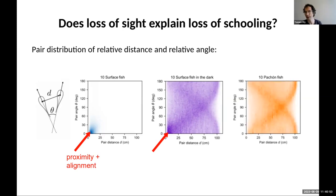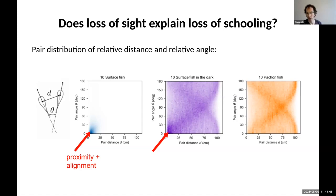By contrast, with cave fish, the color still spreads over all available distances and angles because they're not schooling, and you still have the arches because they like to follow walls — but there is no dark spot in the bottom left corner at all. This indicates they're not attempting to align or get close to each other.